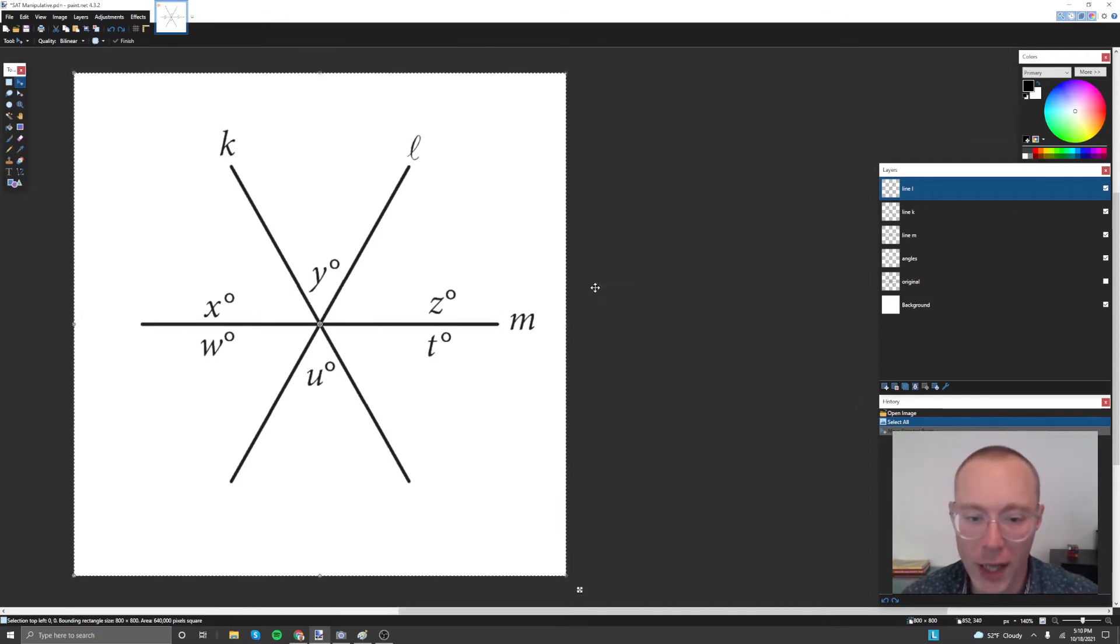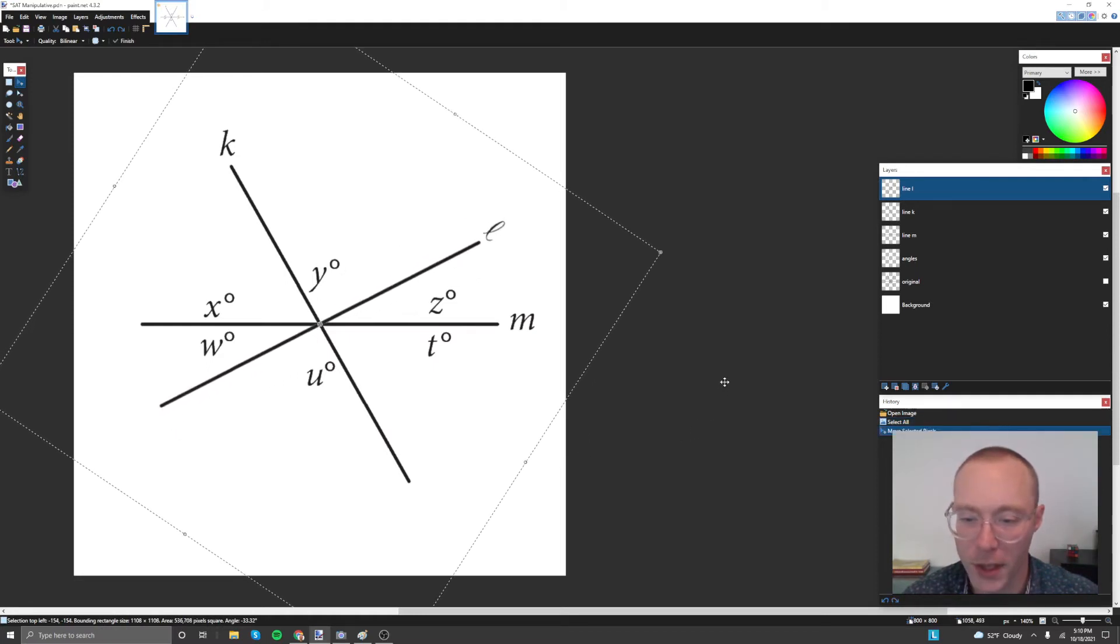If we move line l, we'll notice that x plus y is going to get bigger, but u plus w isn't going to change at all. And if we just move one of these lines, we're going to break our initial condition that x plus y has to equal u plus w.